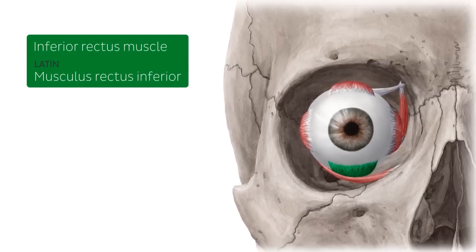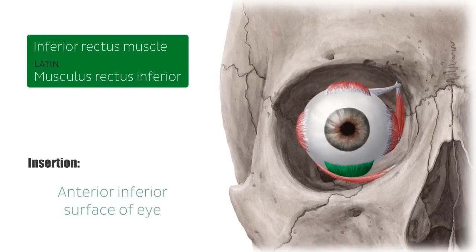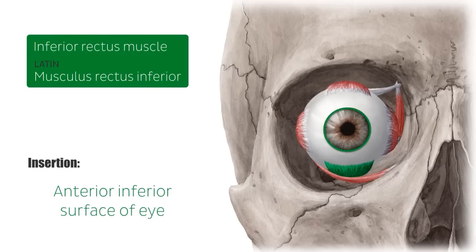The inferior rectus muscle inserts onto the antero-inferior surface of the eye, on the sclera, the white of the eye, about 6 mm posterior to the corneal limbus, indicated by the green circle, which is the border between the cornea and the sclera.